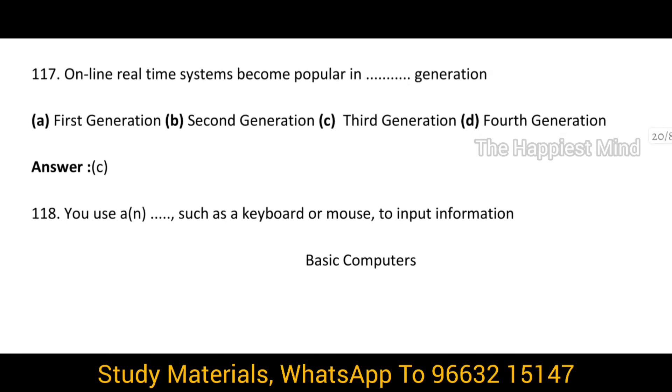Question 117: Online real-time systems became popular in which generation? It is option C — the third generation.